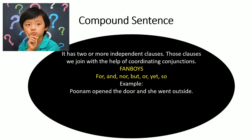Example: 'Poonam opened the door and she went outside.' Here 'Poonam opened the door' is a separate sentence, and 'she went outside' also shares a complete meaning on its own. We have joined these two things with the conjunction 'and.' 'Poonam' is a subject, 'opened' is a verb; 'she' is also a subject and 'went' is also a verb. So in this complete sentence we have two subjects and two verbs — two separate sentences joined with 'and.'